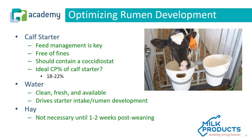To optimize rumen development, paramount attention should be paid to the calf starter. Feed management is key — it needs to be free of fines, it should contain a coccidiostat such as Decox or Bovatec, and the ideal crude protein level should be 18–22%. In addition to a quality calf starter, it is important that clean, fresh water be available. Water drives starter intake and rumen development. Hay is not necessary until 1–2 weeks post-weaning.